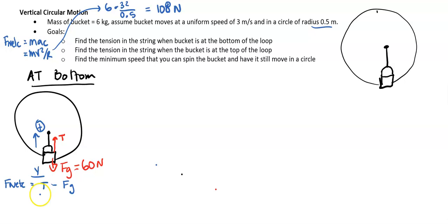So now let's go ahead and go back to this problem. So again, we're finding the tension at the bottom of the loop. So tension, fg is 60, f net c is 108. Do some good old math. Tension turns out to be 168 newton.